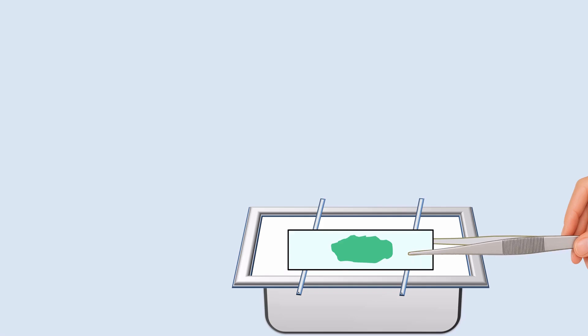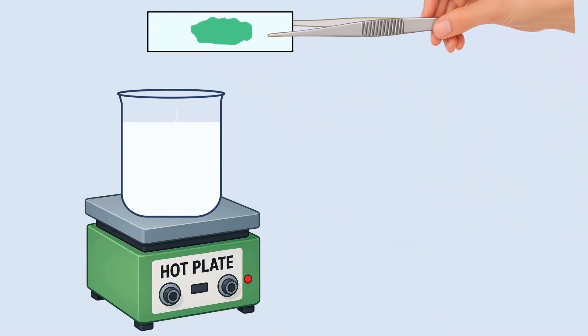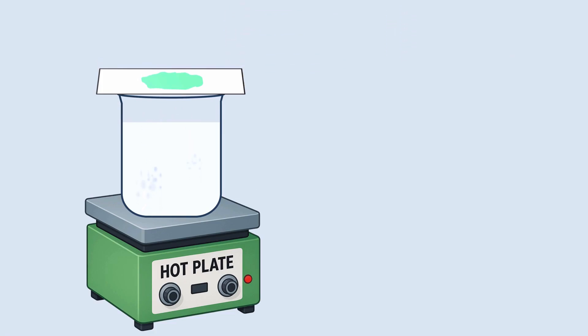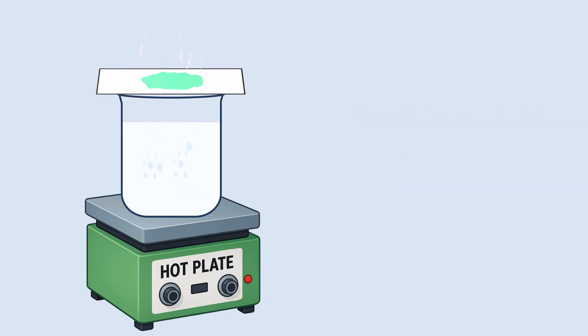Hold the slide with forceps and carefully place it on a beaker of steaming water which is sitting on a hot plate. Allow the slide to steam gently for five minutes. Do not allow the stain to evaporate while steaming. Replenish the stain as needed. This heat helps the dye penetrate the tough spore coat. At this stage, both the vegetative cells and endospores are green in color.